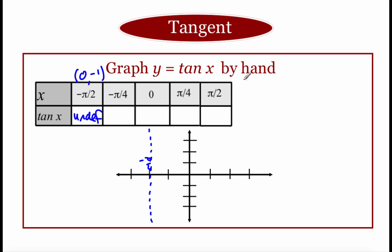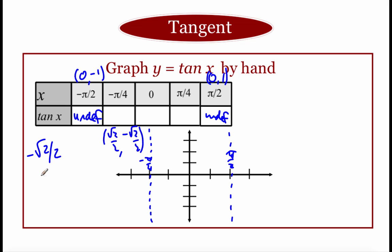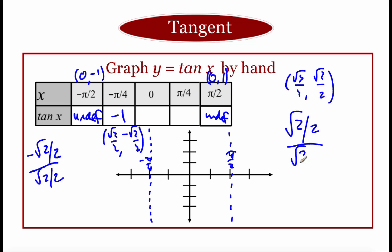At pi over 2, the ordered pair is (0, 1), and stacking those as a fraction gives another undefined value, so there's another asymptote at pi over 2. At negative pi over 4, the ordered pair is (√2/2, -√2/2). Stacking those as a fraction gives -√2/2 over √2/2 — essentially a number divided by itself but negative — so the y value at negative pi over 4 is -1. At pi over 4, the ordered pair is (√2/2, √2/2), so √2/2 over √2/2 equals 1. So at negative pi over 4 we go down to -1, and at pi over 4 we go up to 1.